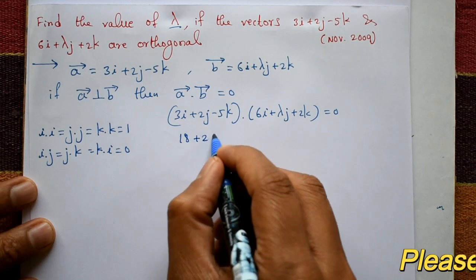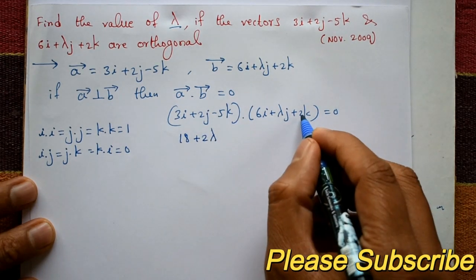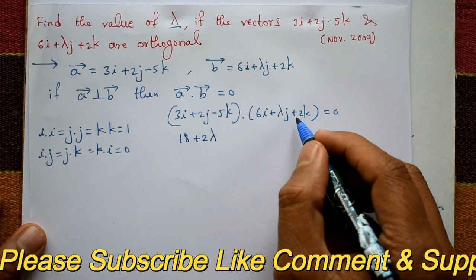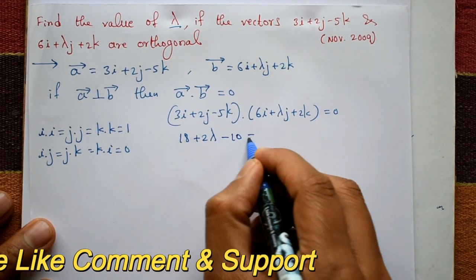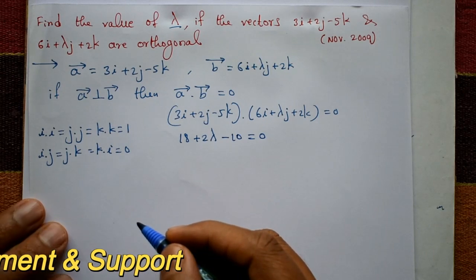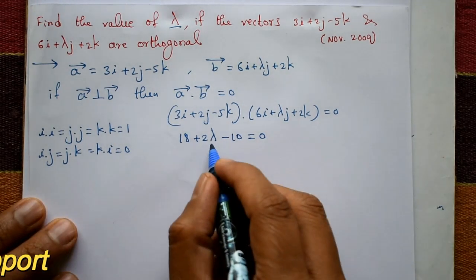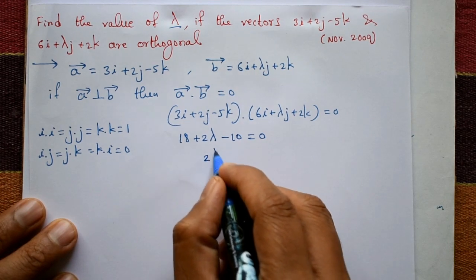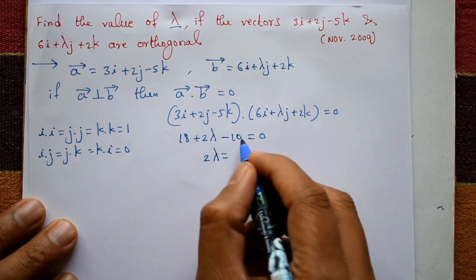That is equal to 0. Okay, now 18 minus 10 is 8, plus 2 lambda is equal to 0. Okay, now plus 8 shift to the right hand side is minus 8.